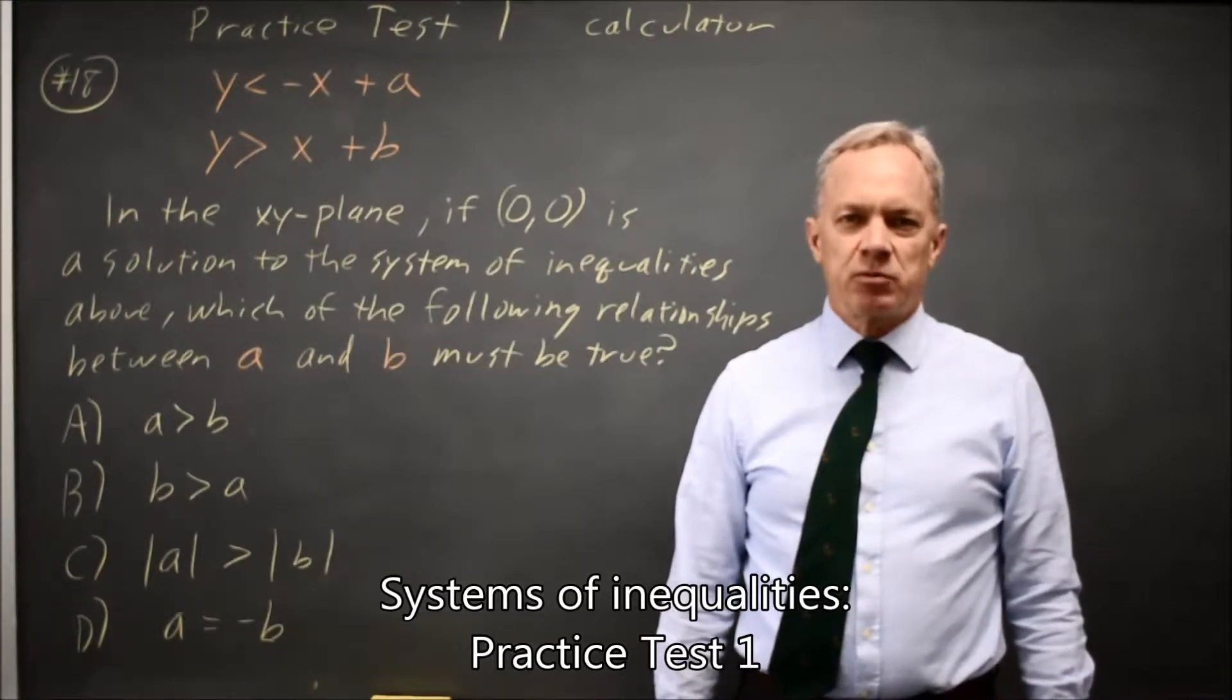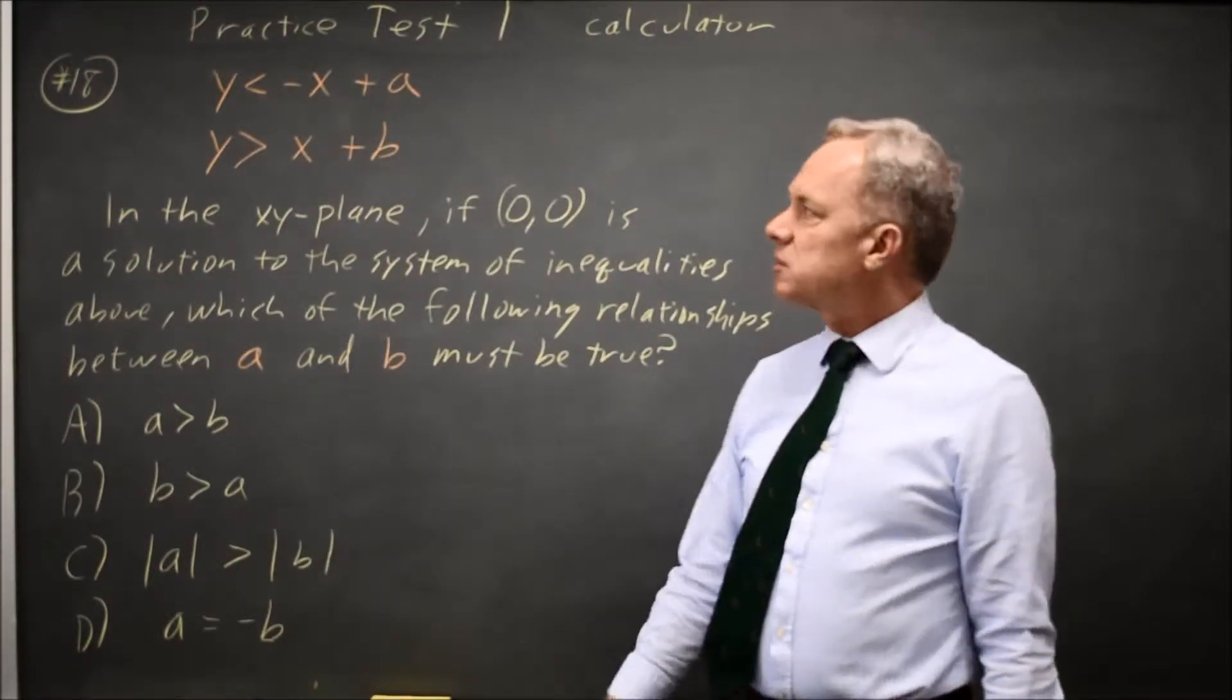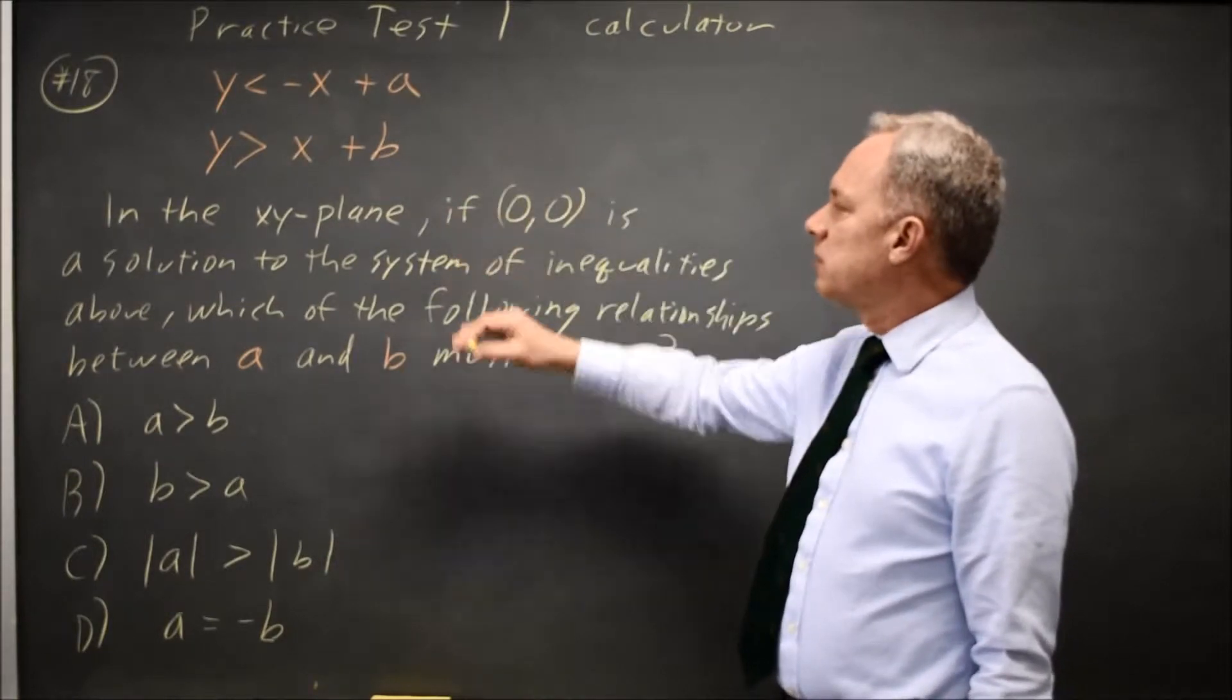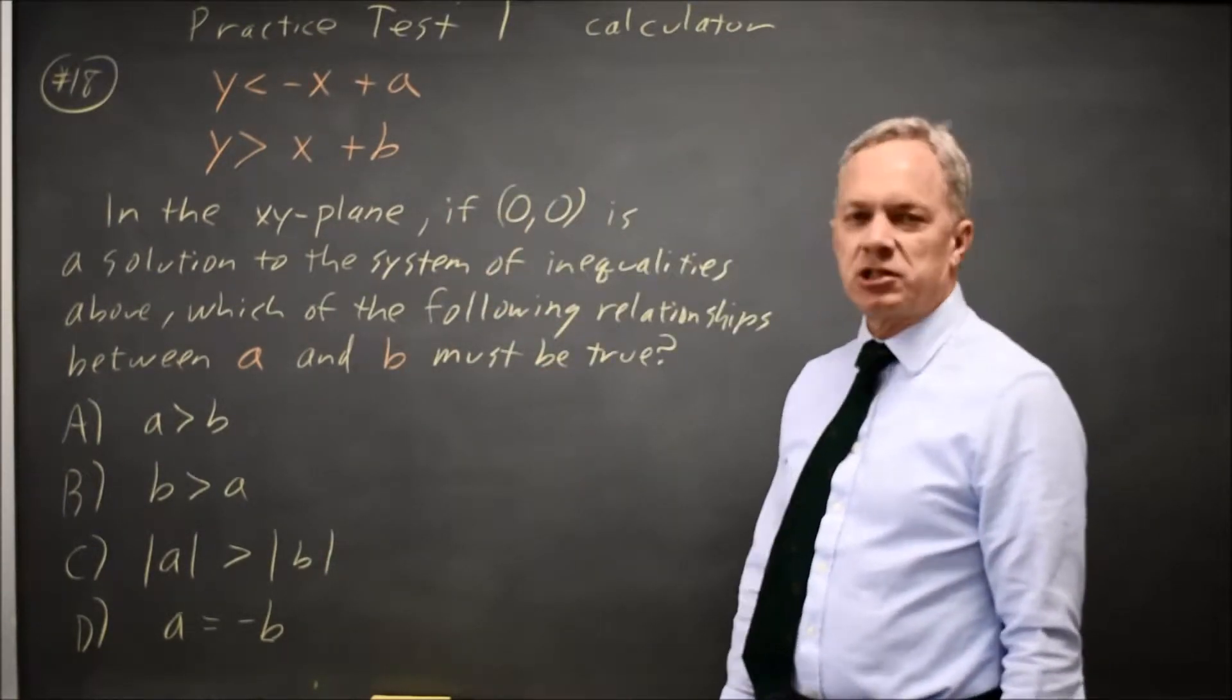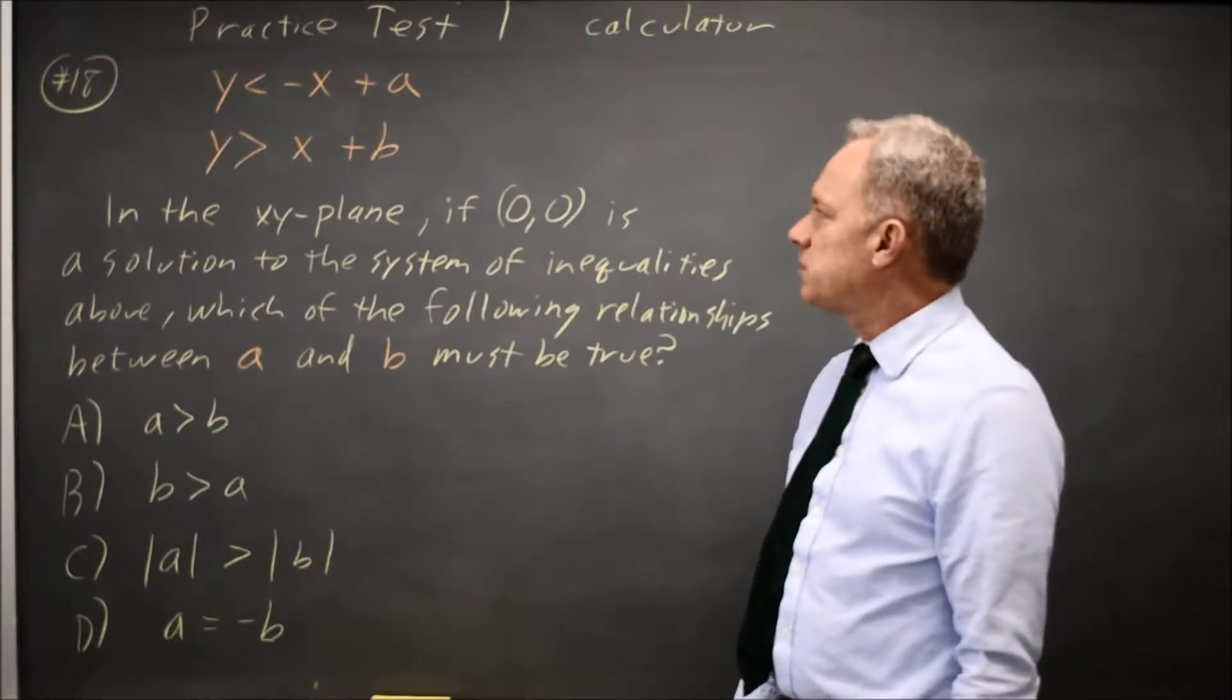This is Calculator Question Number 18 from Practice Test 1. College Board gives us two inequalities and says if the origin is a solution to this system, which of the following relationships between A and B must be true?